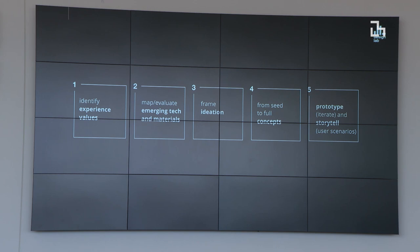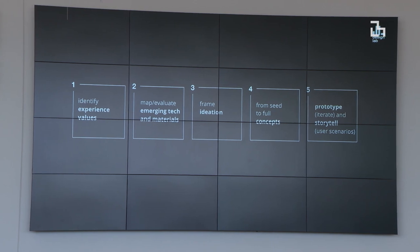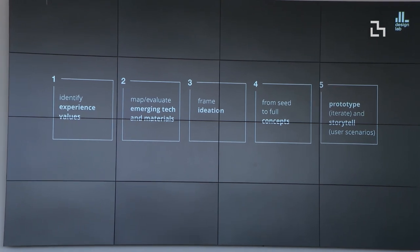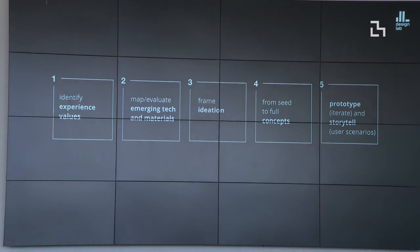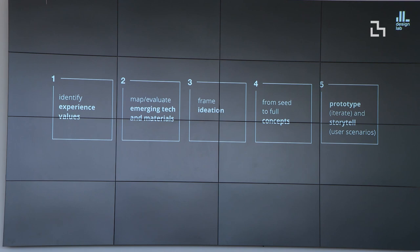This takes through five steps: identifying user values — what are the experience values we want to embed into designing a product or an experience — and how we can then evaluate and map the emerging tech, materials, and things we want to bring in to enable the experiences. Then framing the ideation process from taking it from seed concept to fully developed concepts, and prototyping and iterating throughout so you can really take that idea to a realized experience that can be storytelled to others.